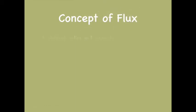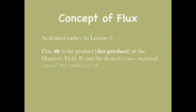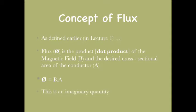Let's start with the concept of flux. As defined in lecture number one, flux is the dot product of the magnetic field and the desired cross-sectional area of the conductor. Mathematically, phi (Φ) is equal to B into A. Note that flux is an imaginary quantity.